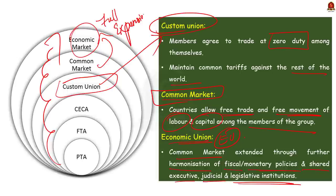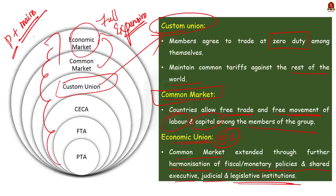Remember that trade agreements expand from preferential trade agreement, to free trade agreement, to comprehensive economic cooperation agreement, then to customs union, then common market, and finally full expansion in the economic union. All these definitions can themselves be put as preliminary-type questions — that is why I discussed the classification of trade agreements. This is a very important economic topic and a straightforward question can be asked about the definitions of these trade agreements. I am taking every discussion elaborately so you can utilize it for both preliminary and mains examination.